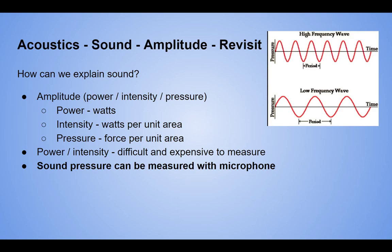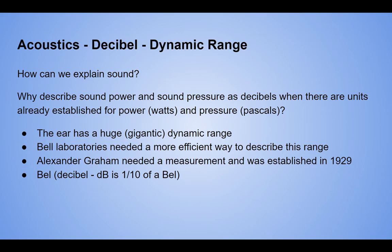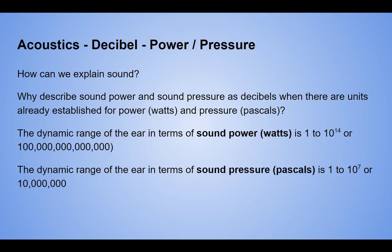We use sound pressure because it's easier to measure — usually called SPL. We use power for mechanical equipment. Sound power and sound pressure are already defined in watts and pascals respectively. We use decibels because the ear has a gigantic dynamic range. At Bell Laboratories, Alexander Graham Bell needed a unit to measure signal on transmission lines — that's where the 'bel' came from. In acoustics, one tenth of a bel is a decibel.